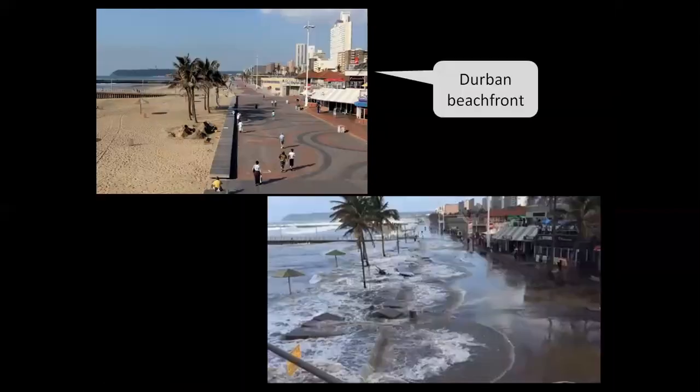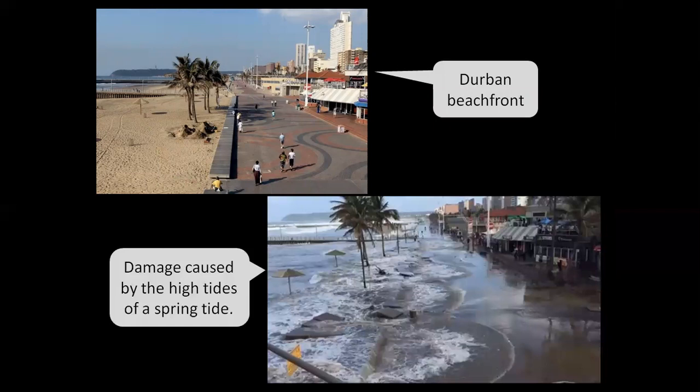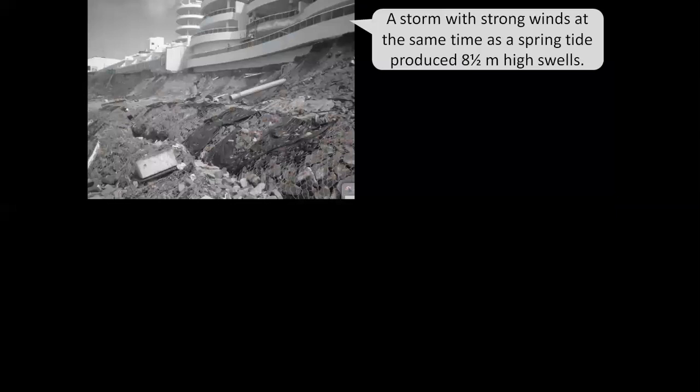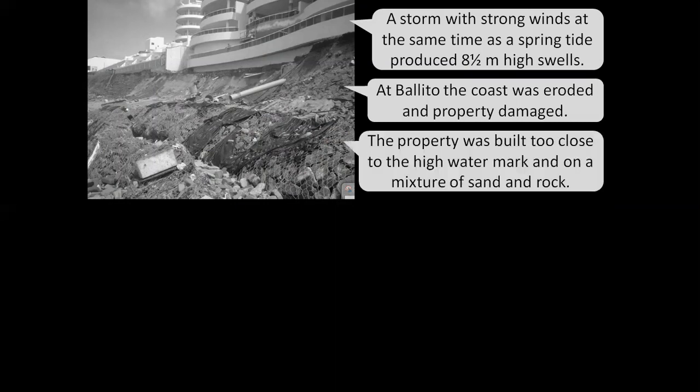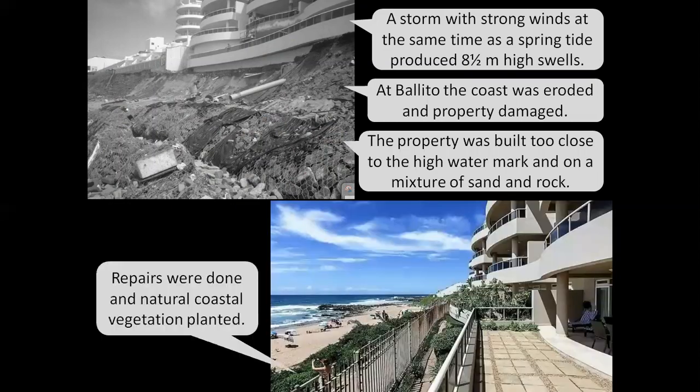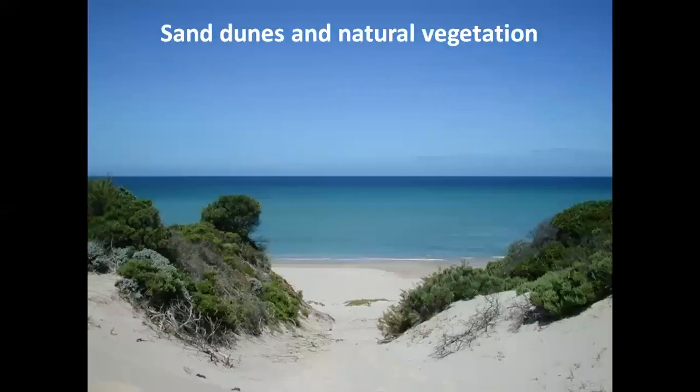This is Durban beachfront. This is damage caused by the high tides of a spring tide. A storm with strong winds at the same time as the spring high tide produced eight and a half meter high swells. At Ballito, the coast was eroded and property damaged. The property was built too close to the high water mark and on a mixture of sand and rock. Repairs were done and natural coastal vegetation planted. Sand dunes and natural vegetation absorb wave energy.